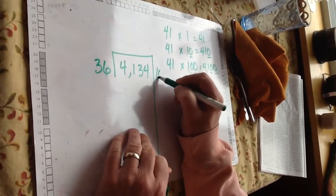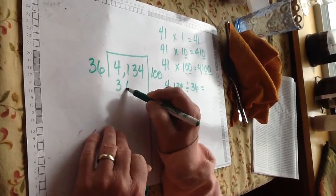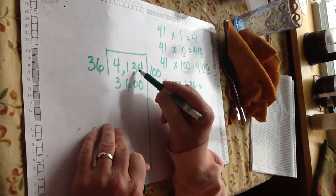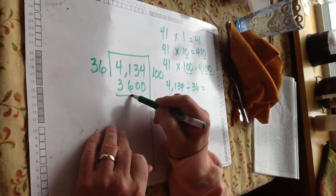But if I have 100 groups, that's going to be 3,600. It's less than 4,134, so I know it can go in there. Subtract.